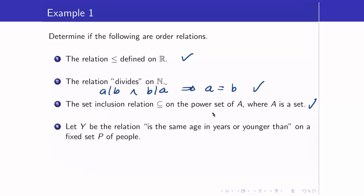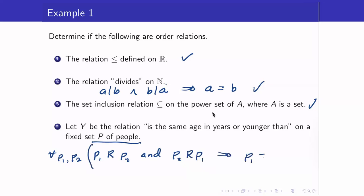Let Y be the relation 'is the same age in years or younger than' on a fixed set of people. Here we are relating the people. So for all P1, P2, if P1 is related to P2 and P2 is related to P1, does it mean they are the same person? No — we only say they have the same age. Notice the difference in the relation here: we are considering the relation on a set of people, so this is not anti-symmetric.